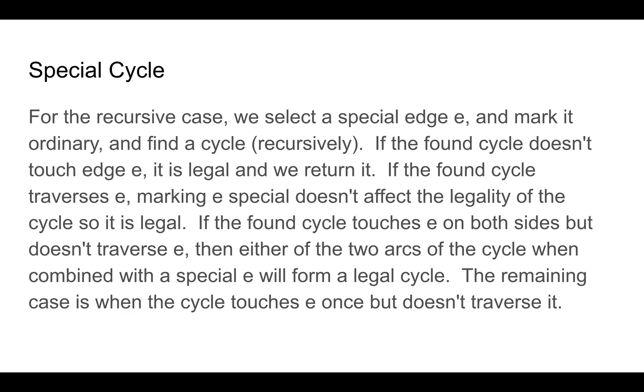If the found cycle goes through e, then marking e special keeps the cycle legal because those two other edges that e is adjacent to in the cycle are not special. So we can return that cycle.